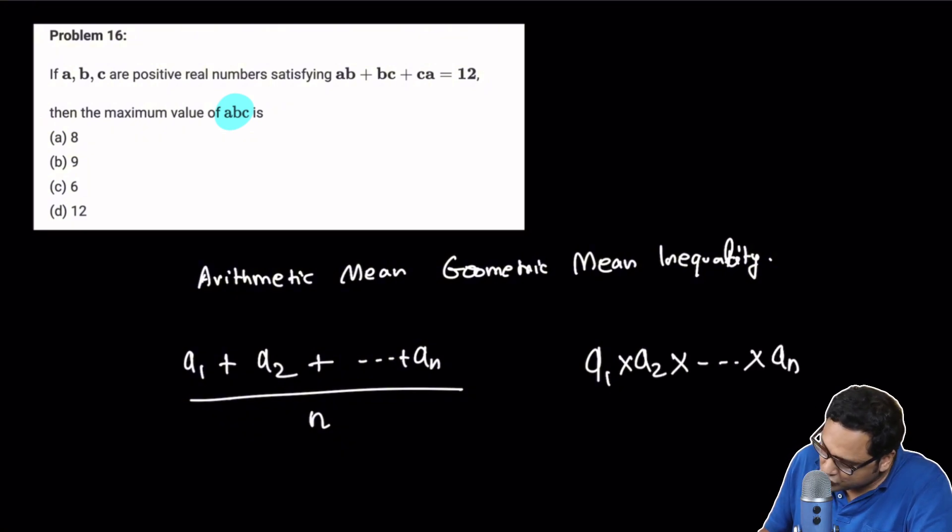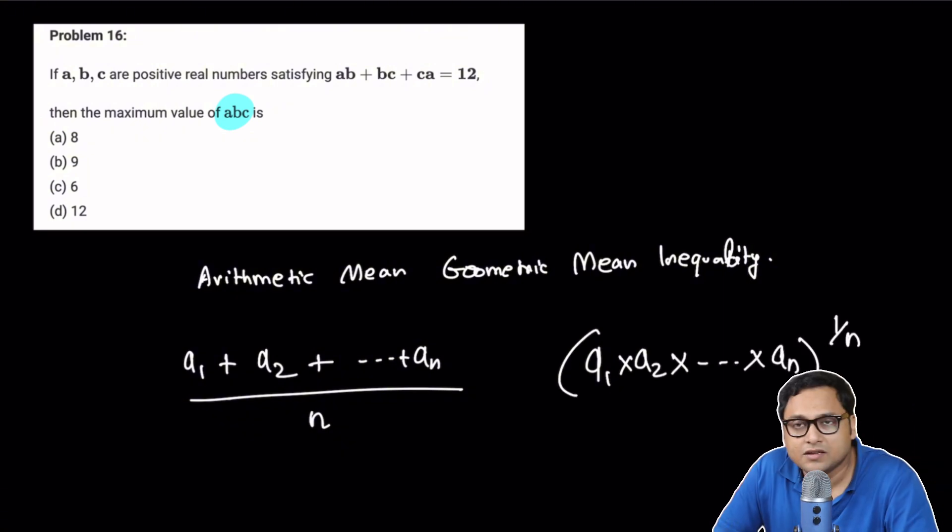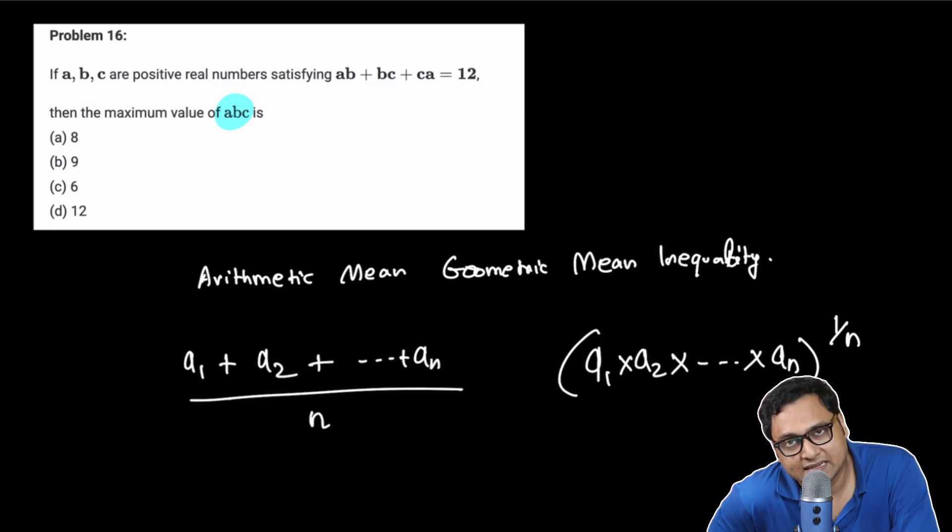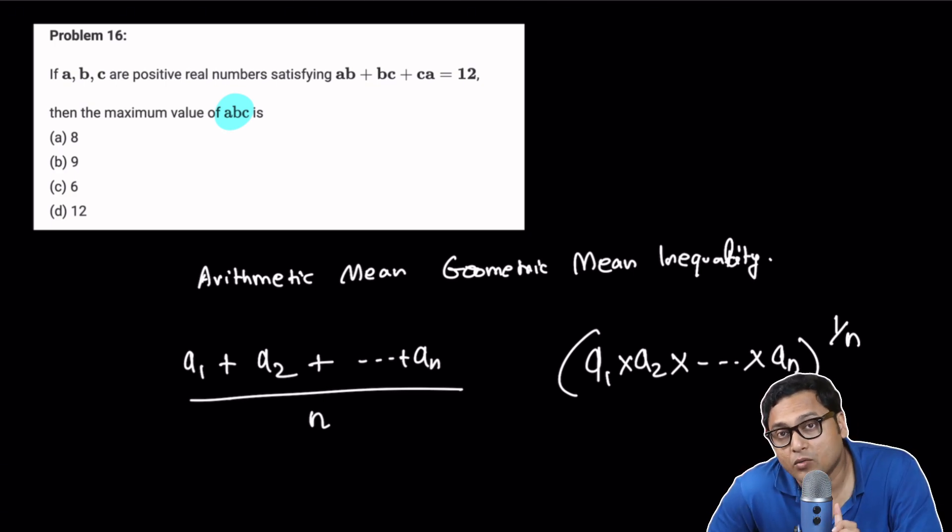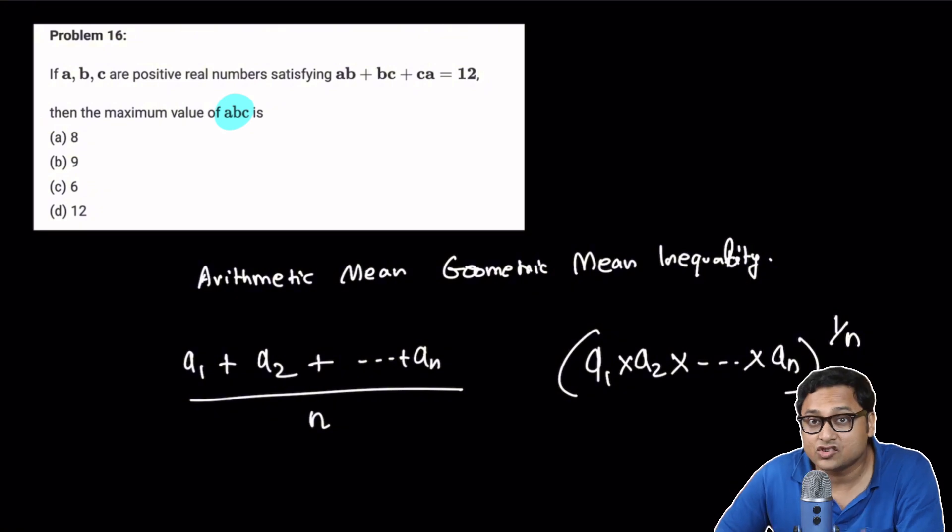The arithmetic mean will always be larger than the geometric mean. You multiply the numbers and you raise that product to the power 1 over N. That is the geometric mean. So this is always larger.